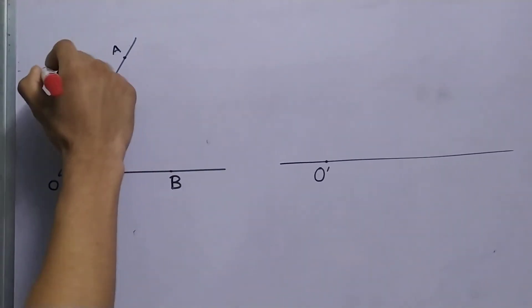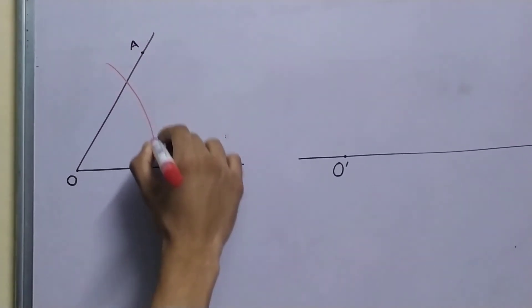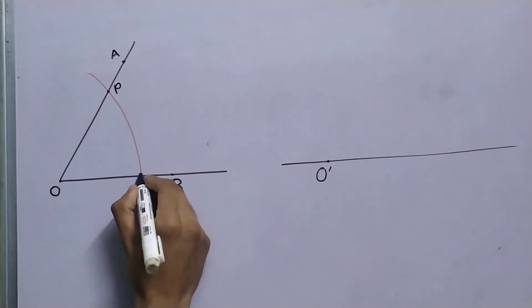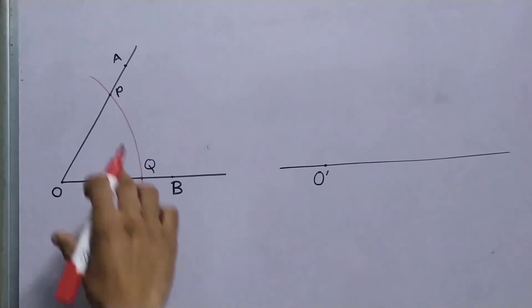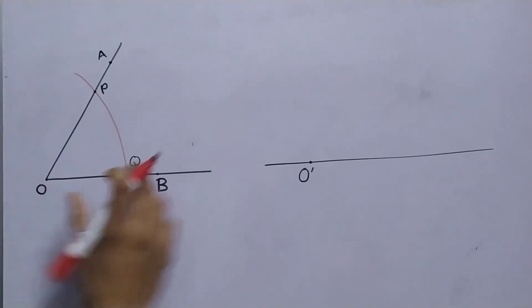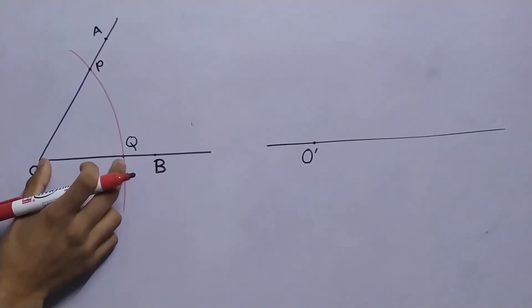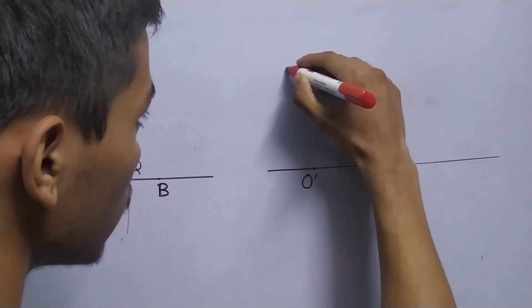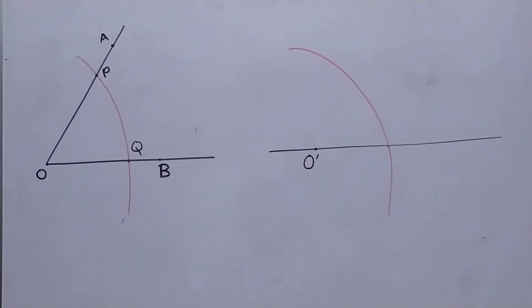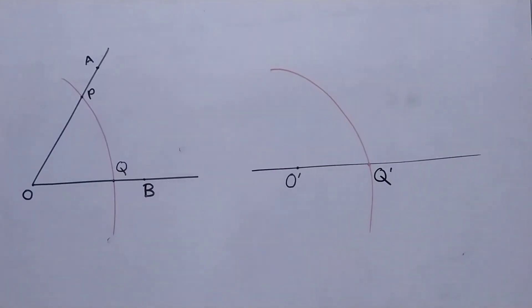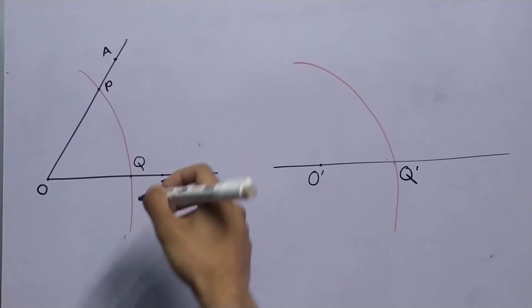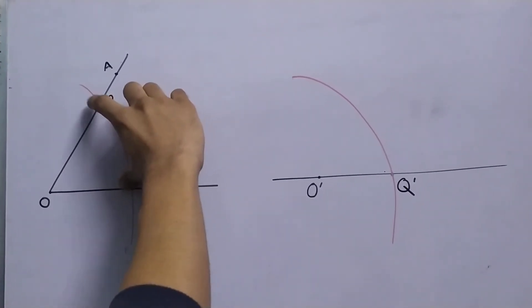Now, our second step, we made an arc crossing these two points. Let me call this point P and this point Q. Now we didn't change our compass length and then we made an arc right over here. So what this step will do is fix this length, so when we draw the arc this length OQ will be equal to this length O'Q'.